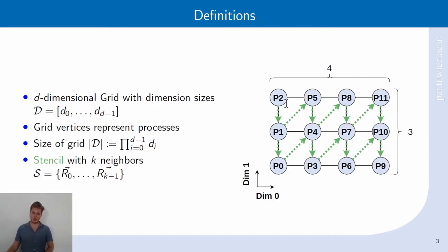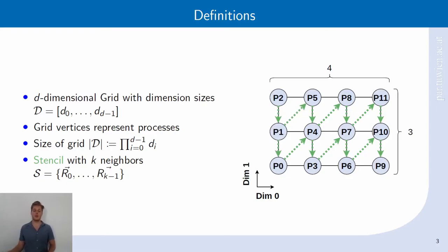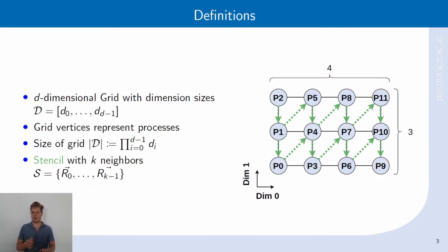We have an example here in green: every process will communicate with the process one down and one up. So for p1, we will communicate with p0 and p5. It is important to note that we generally assume the number of communication partners is small in comparison to the overall grid size, and that every process has exactly the same communication neighborhood.